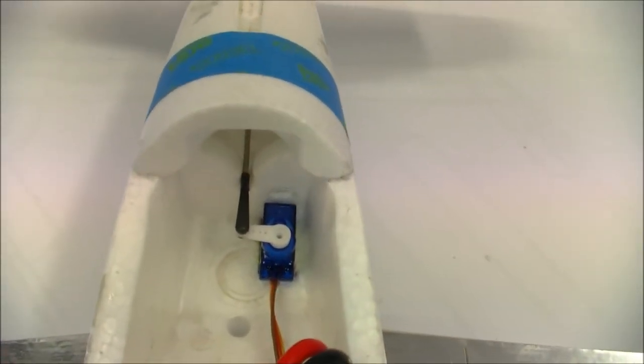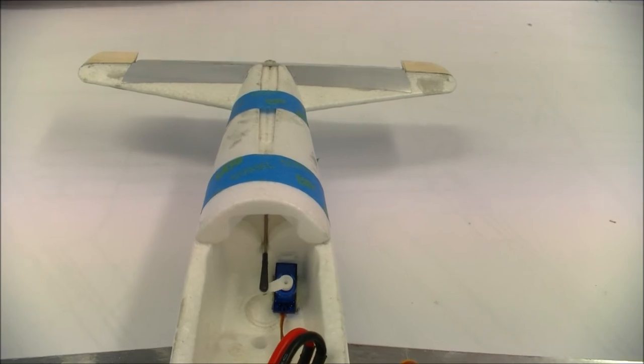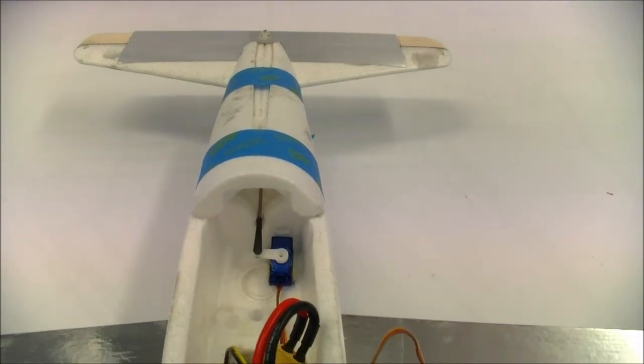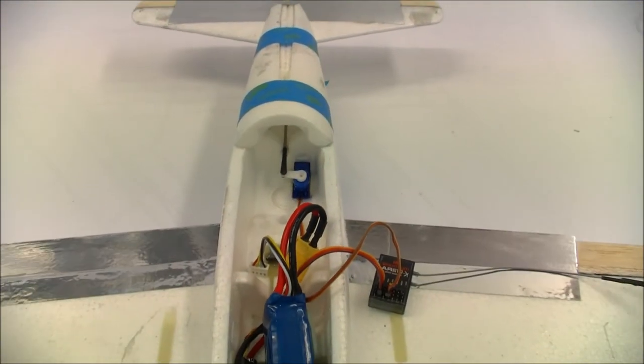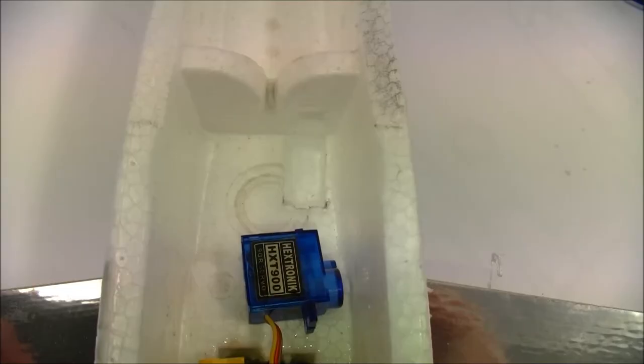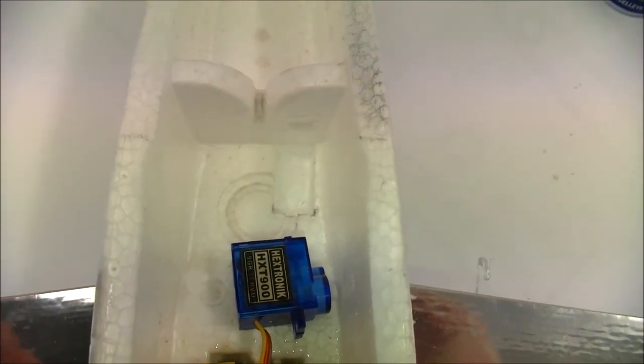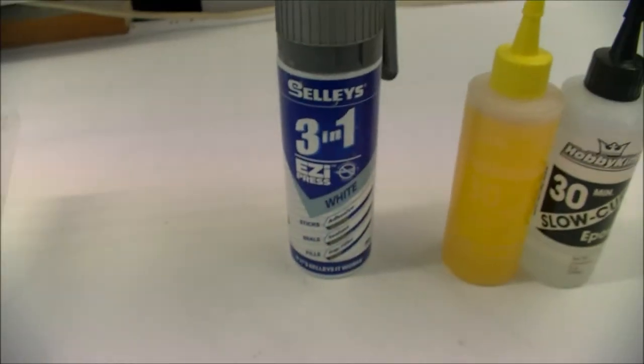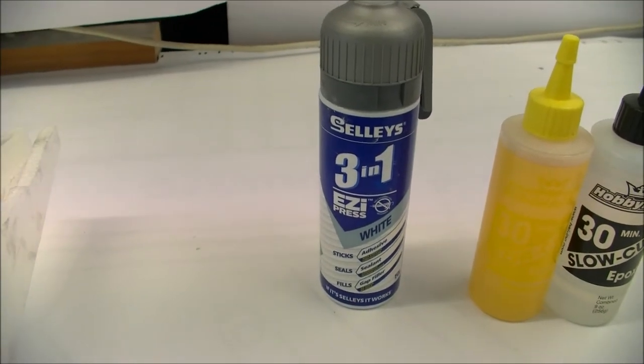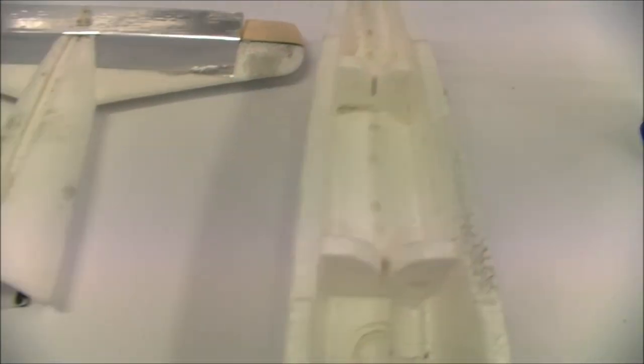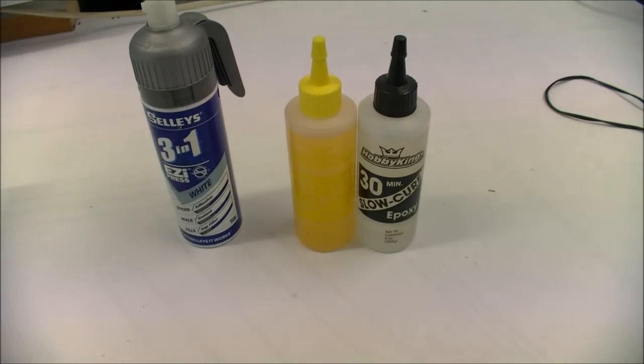The pushrod is cut to length. The servo is installed and bench tested. Now we'll glue it in. The next step is installing the aileron servos. To glue in the servo all I'm using is this adhesive silicon. And to glue on the empennage I'll be using the 30 minute epoxy.